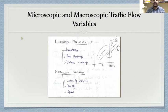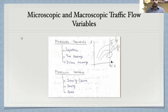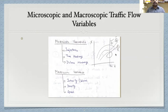Trajectories means the path followed by a particular vehicle. In the graph we can see different paths labeled A, B, and C. Curves A and B define certain trajectories, while curve C does not define a trajectory — because at a definite time t, curve C shows different positions, implying the vehicle occupies different spaces at the same instant, which is impossible. That is why curve C is not an example of a trajectory.